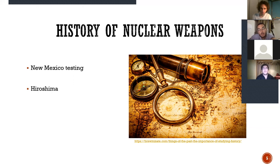Three days later, they dropped another bomb on Nagasaki, killing 80,000 people on impact, and another 80,000 people died from the after-effects of the nuclear bomb.